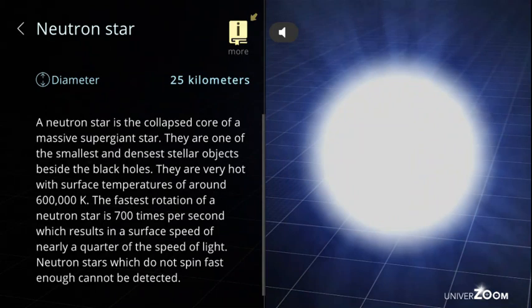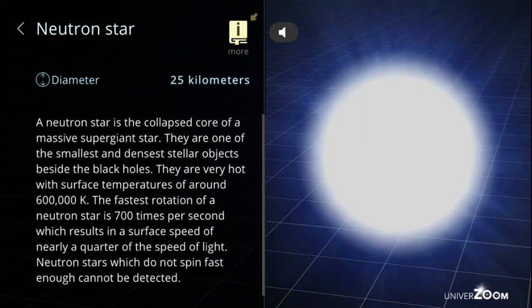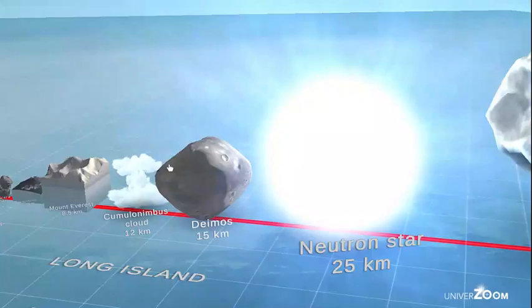Neutron star, diameter: 25 kilometers. A neutron star is the collapsed core of a massive supergiant star. They are one of the smallest and densest stellar objects beside the black holes. They are very hot with surface temperatures of around 600,000 K. The fastest rotation of a neutron star is 700 times per second which results in a surface speed of nearly a quarter of the speed of light. Neutron stars which do not spin fast enough cannot be detected.